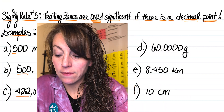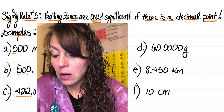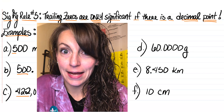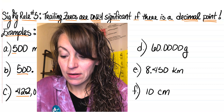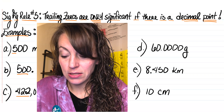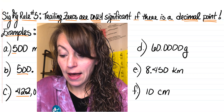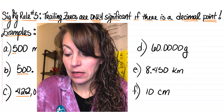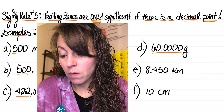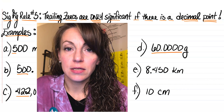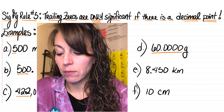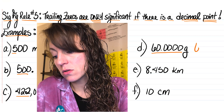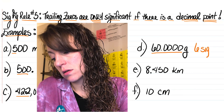In letter D, we have 60.00000 grams. We have a nonzero digit followed by five zeros after the decimal point. Since there is a decimal point present, all of those trailing zeros are significant, giving us a total of 4, 5, 6 total sig figs.